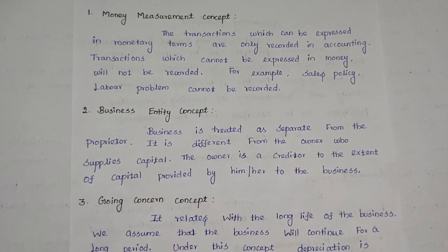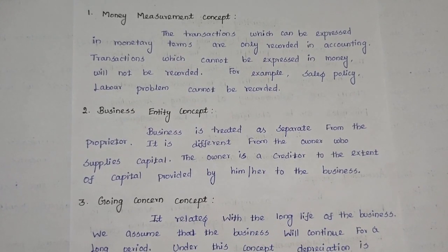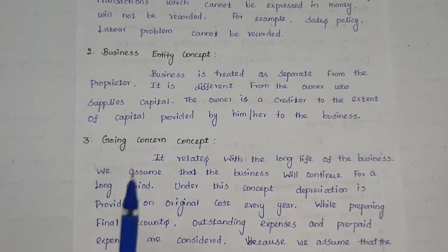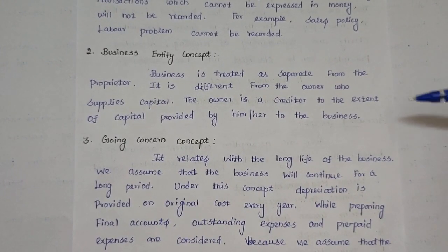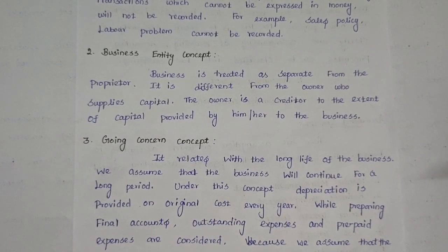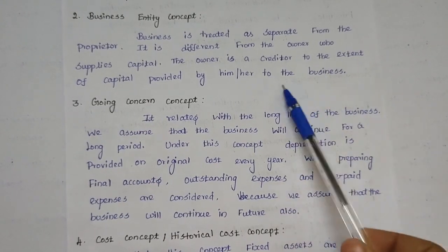Under the business entity concept, the business and the owner are separate. The owner's personal purchases, such as personal groceries, will not be recorded in accounting. However, if the owner purchases stationery or any other business-related items, those transactions will be recorded in accounting, because the business has its own name, brand, goodwill, and reputation. When the owner invests capital, the capital amount is recorded on the credit side. If the owner withdraws an amount, it is called drawings and is also entered on the credit side. Only business-related transactions are recorded; personal transactions cannot be recorded.